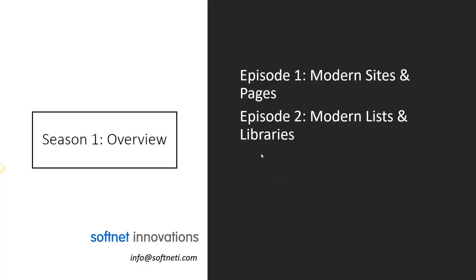In Episode Two, we'll take a look at the modern lists and modern document libraries. The concept of lists and document libraries is the same all the way back from 2007 — creating views, site columns, binding them to content types. The major piece is the UI design. Copy and moving files is much easier out of the box; you don't need third-party components to move documents between folders or even between different libraries within a site or site collection.